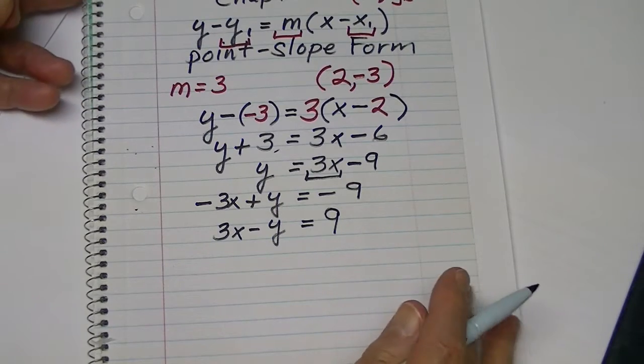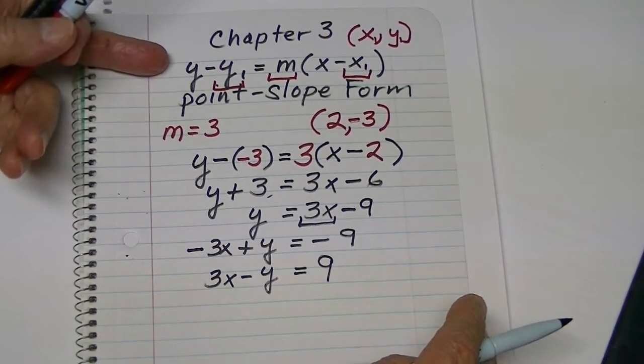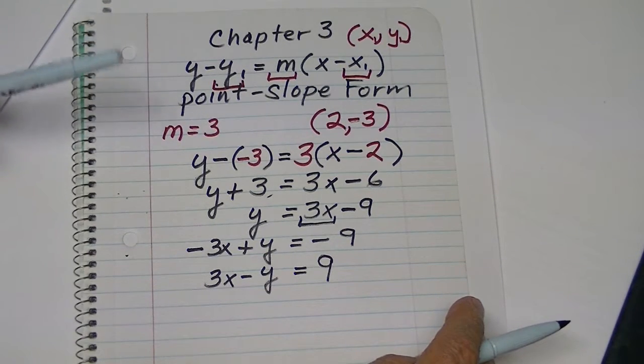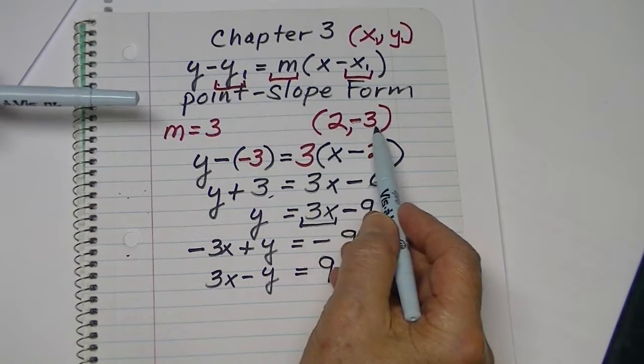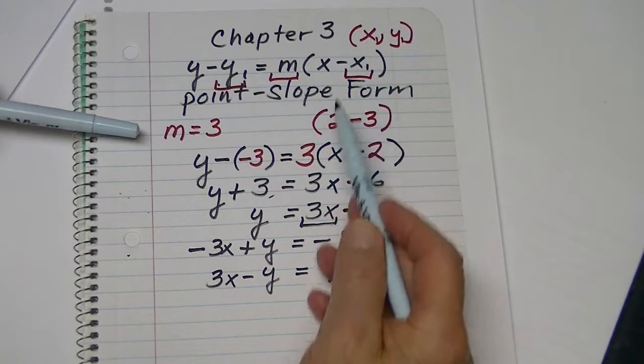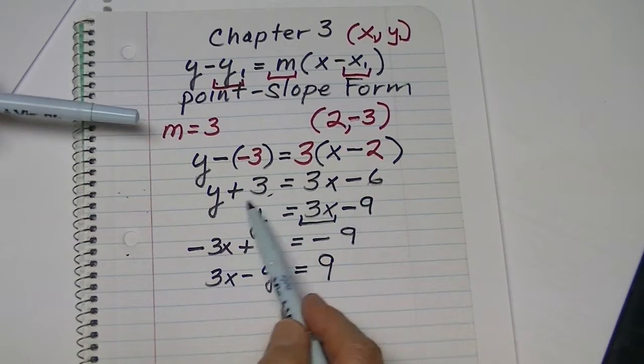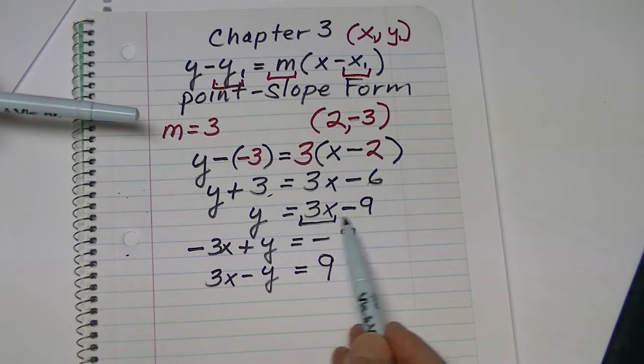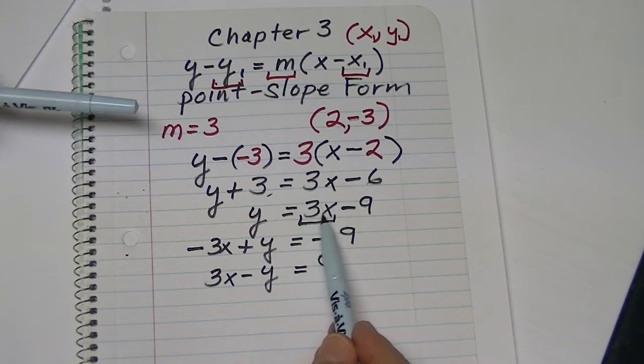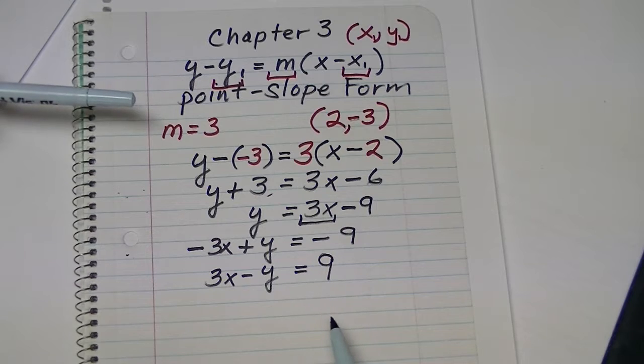So, again, using our point-slope equation, if we have one point and the slope, we substitute it into the equation and then carefully work it through. You usually get slope-intercept form first, but we can convert slope-intercept to the standard form by following this technique.